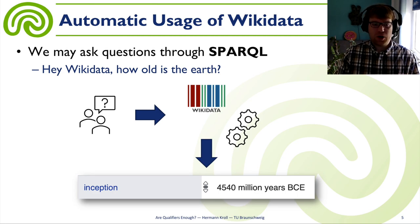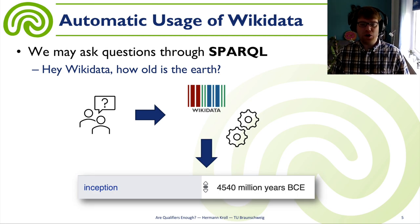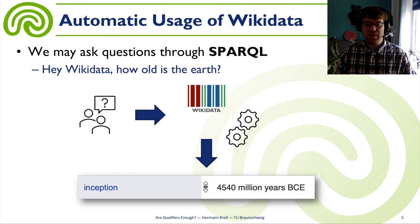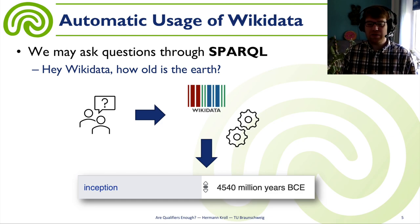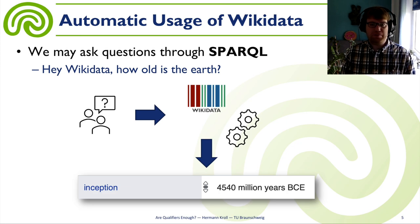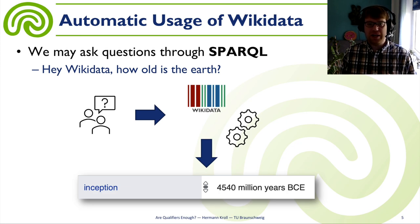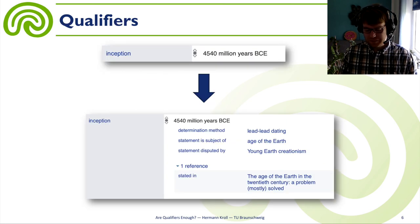Another option could be: 'Hey Wikidata, how old is the Earth?' Then we might find the right property, like the inception. And Wikidata could say something like it's 4.5 billion years old. This is how we can use Wikidata in an automated way.